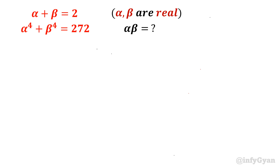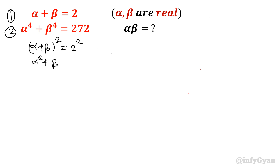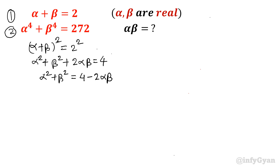The second equation has alpha power 4 plus beta power 4, so we will use alpha square plus beta square whole square. Let's start by squaring both sides of equation 1: alpha plus beta whole square equals 2 square. Expanding, alpha square plus beta square plus twice alpha beta equals 4. So from this, alpha square plus beta square equals 4 minus 2 alpha beta. This is equation number 3.